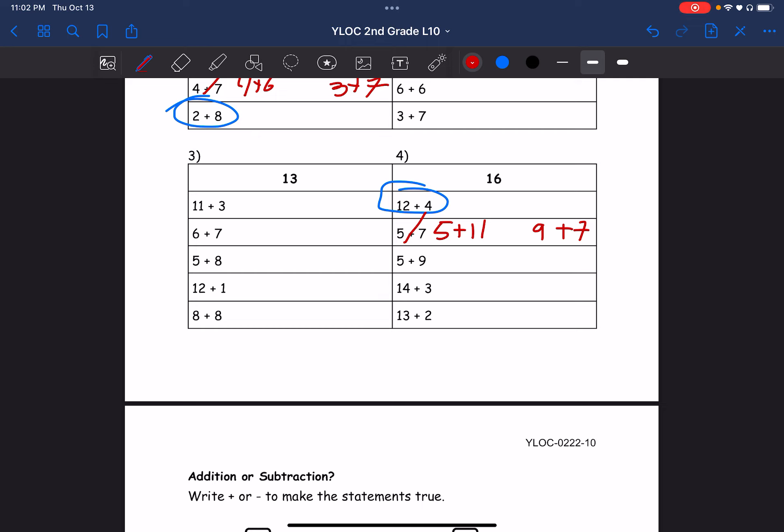Alright, and then 5 plus 9, that also doesn't work so we have to cross it out and make it 5 plus 11. Let's see, 7 plus 9. 14 plus 3 that equals 17.